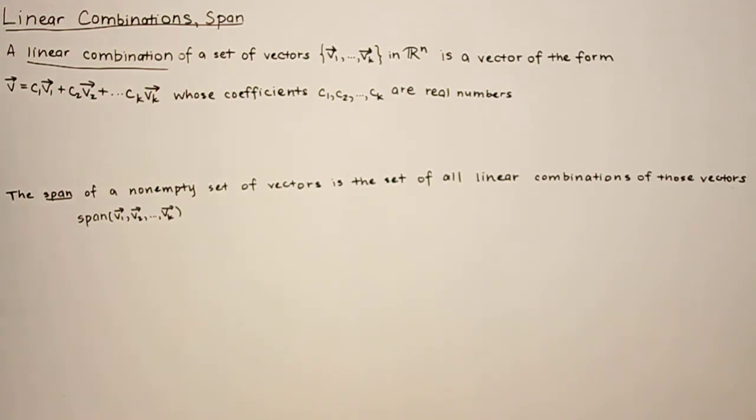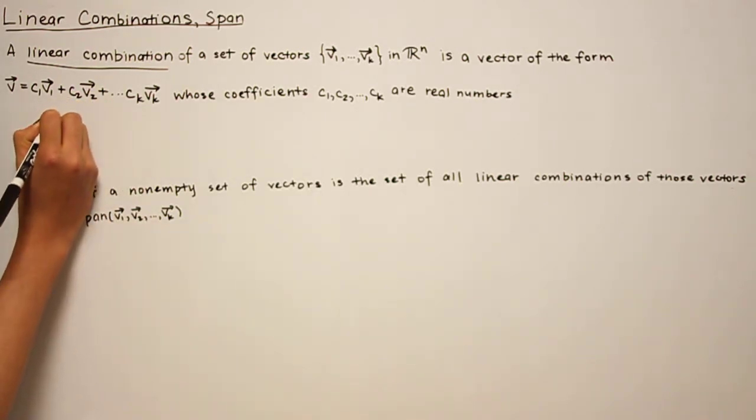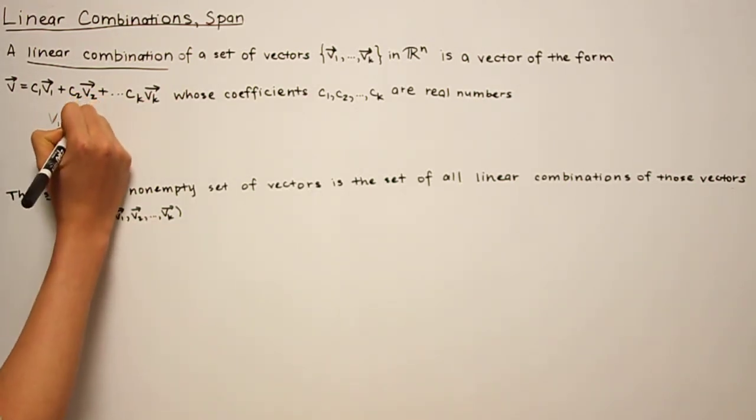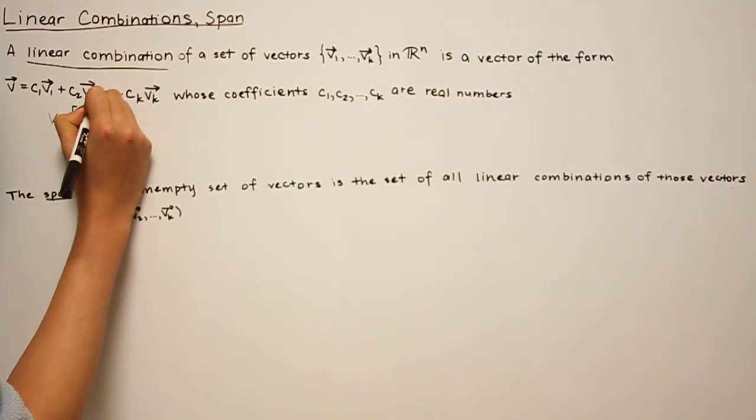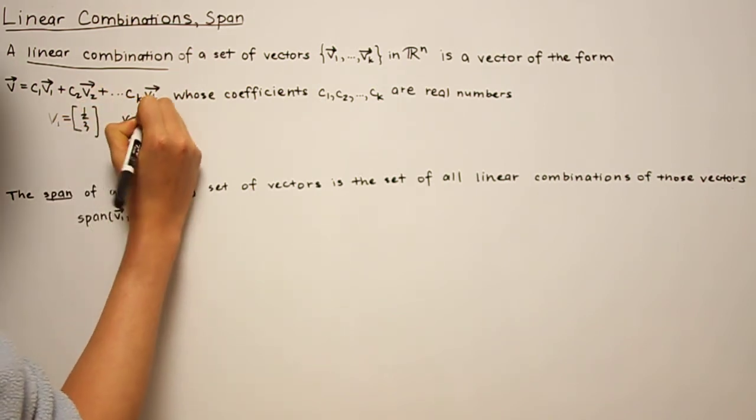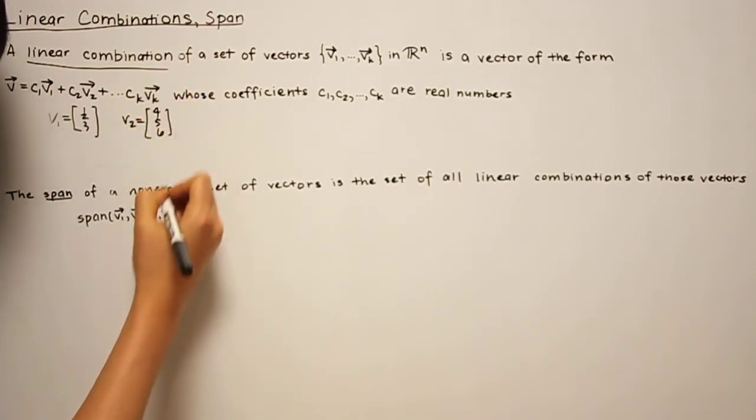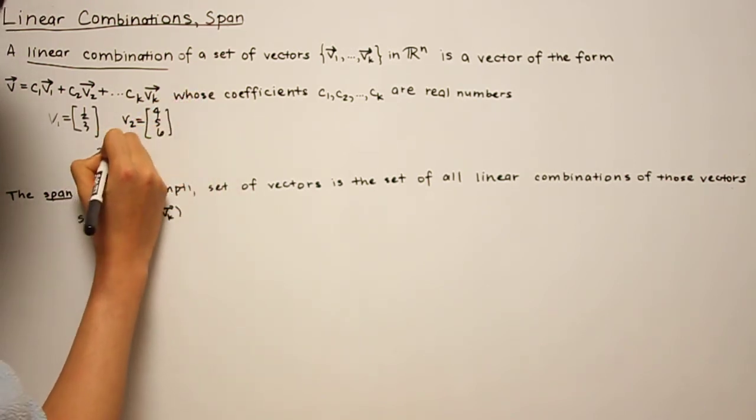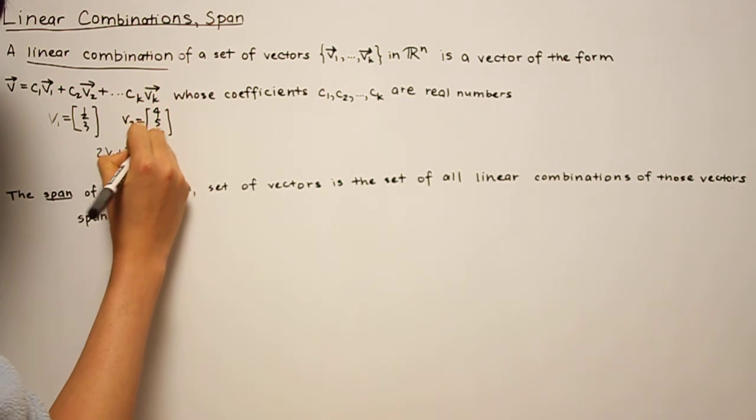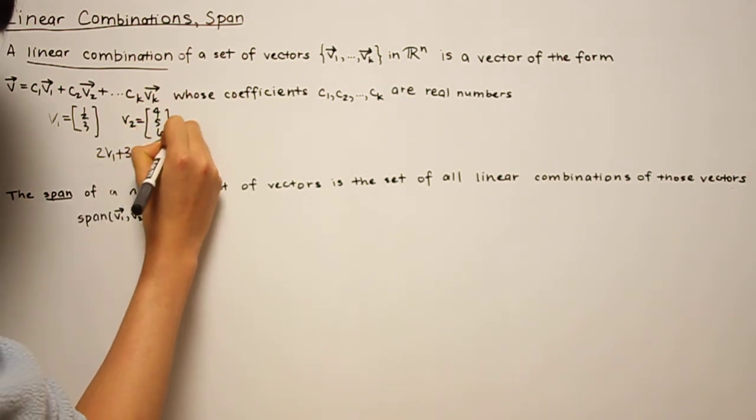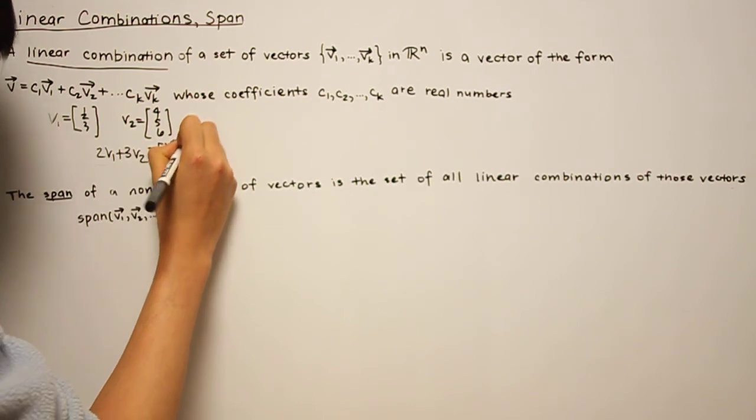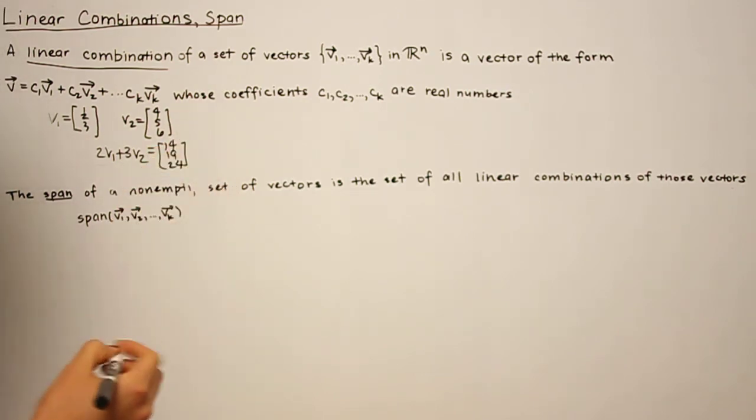So for instance, if we have v1 and v2, then the vector 2v1 plus 3v2 is a linear combination of v1 and v2, where c1 is 2 and c2 is 3.